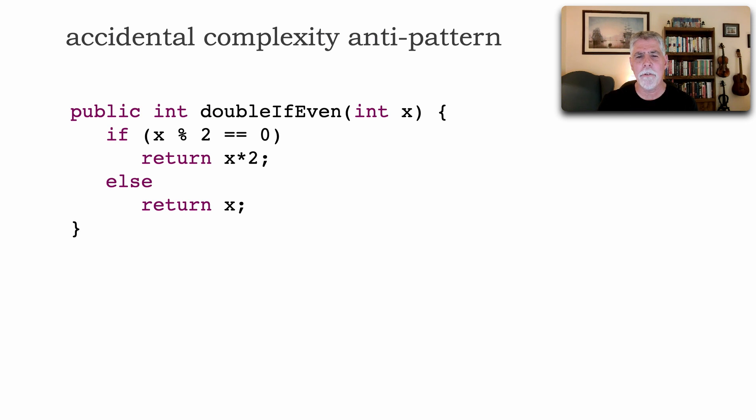Let's see, it doubles if even, right? Yes. How would you know? Well, because that's what you named the method. I mean, I can look and see if x mod 2 equals 0, that means it's even. Multiple return times 2. Otherwise, just return the number.